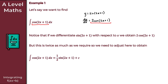So the integral of cos(2x + 1) with respect to x is equal to ½sin(2x + 1) + c, where plus c is our constant of integration. That gives us the solution to Example 1.